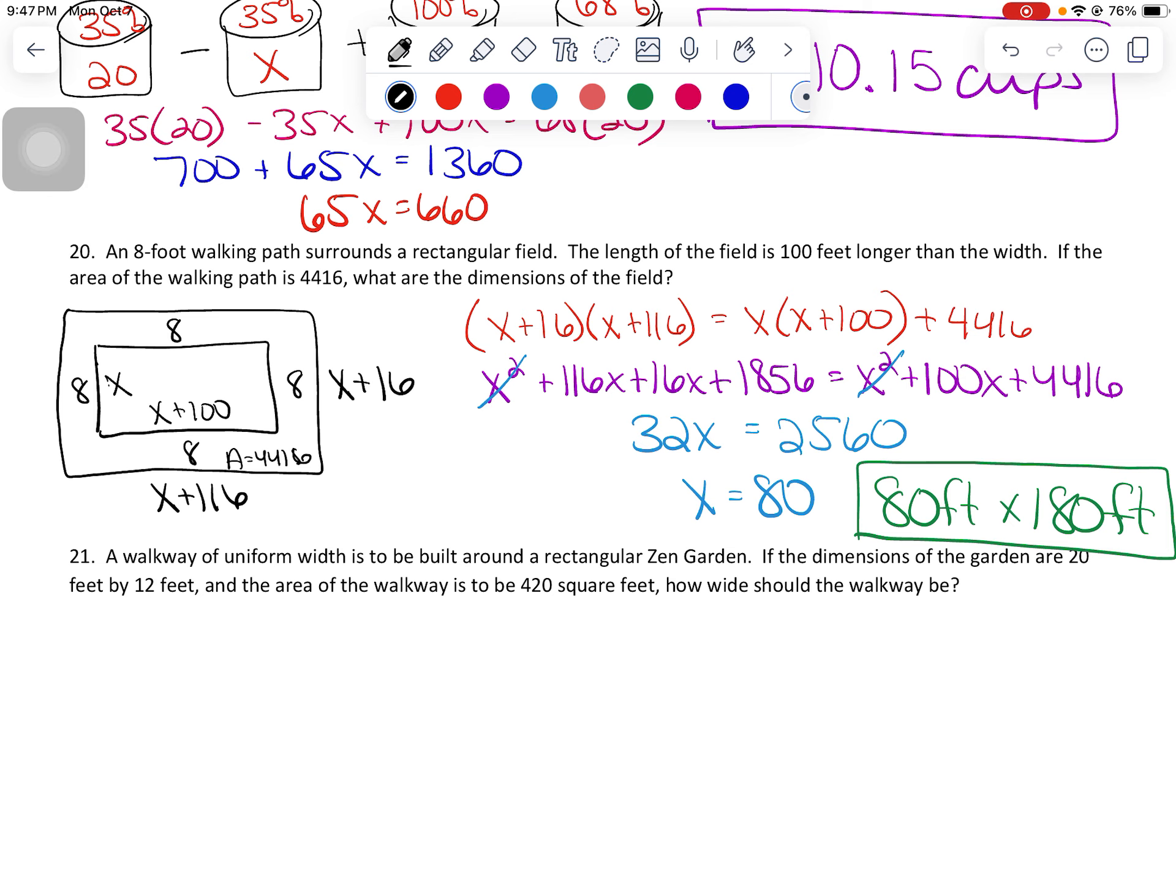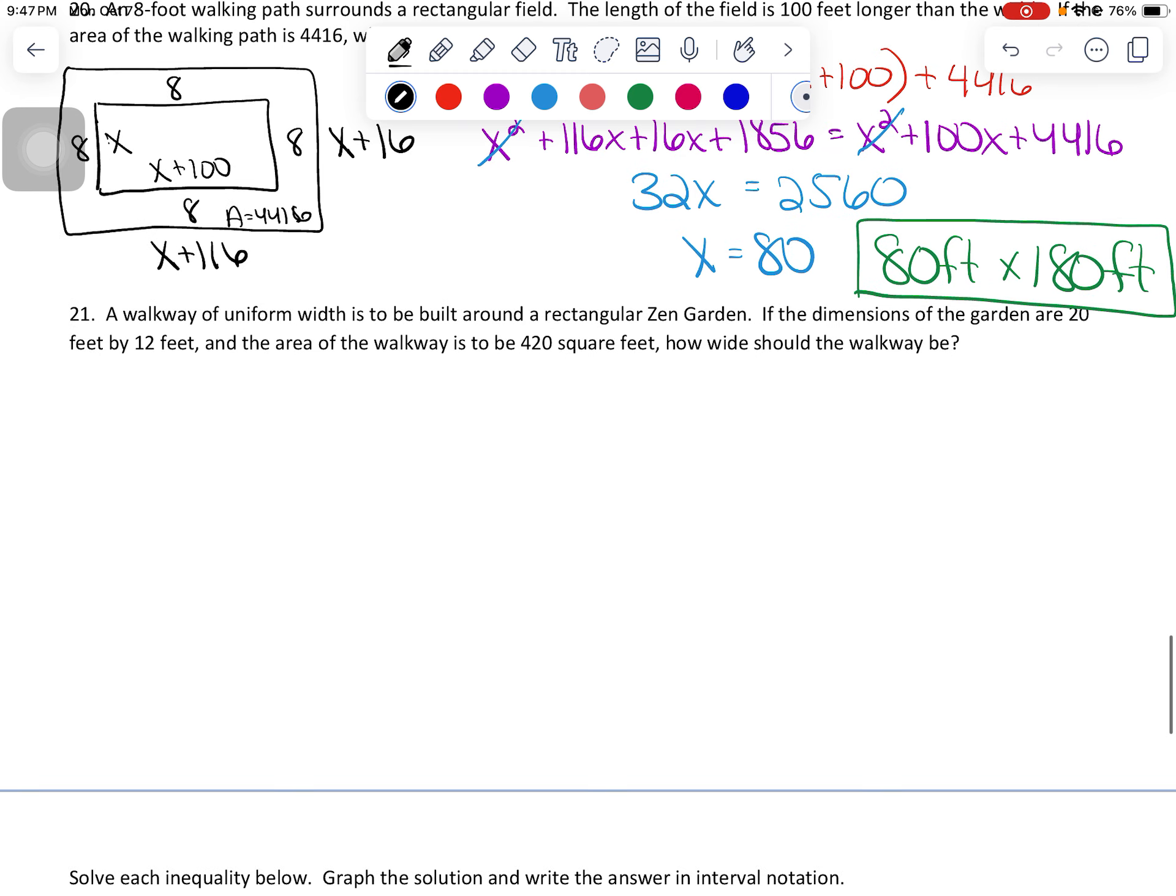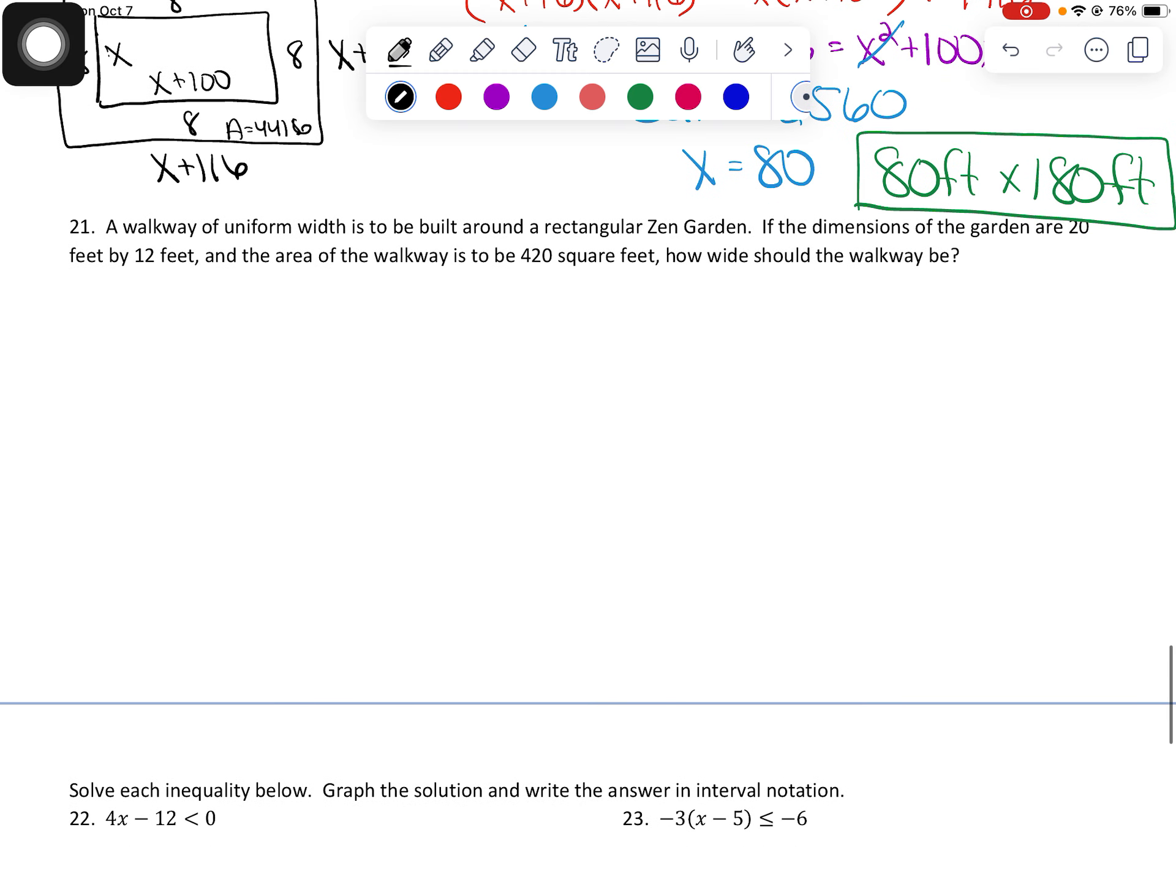Last one on here, we need to do problem number 21. It is another border word problem. We have a rectangular Zen garden. We're going to put a walkway of uniform width around it. Picture not drawn to scale, but close enough. If the dimensions of the garden are 20 feet by 12 feet. So let's go 20 by 12.